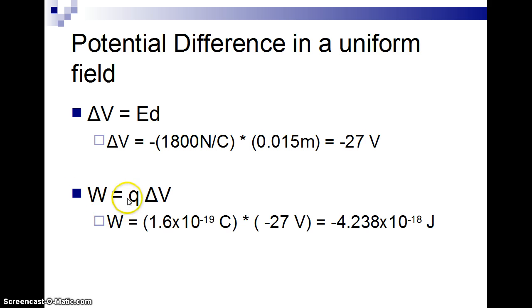And then if we take the charge of that proton, which is 1.6 times 10 to the minus 19th coulombs, and multiply that by the voltage, we can get the energy, which is negative 4.238 times 10 to the minus 18th joules.